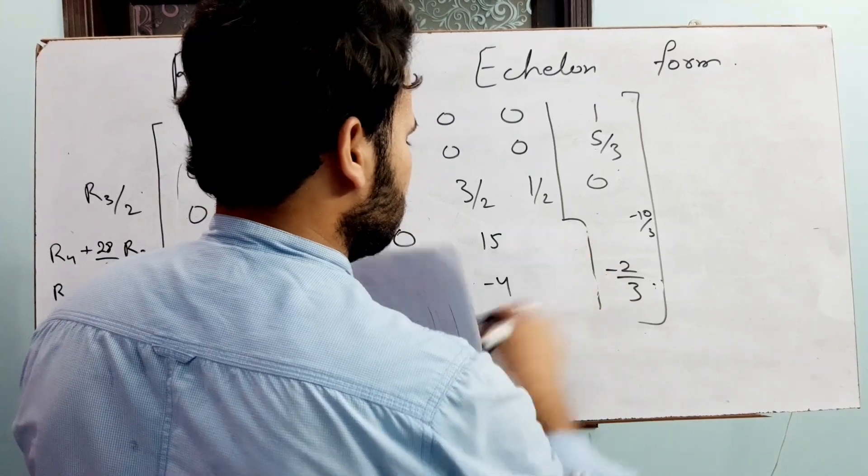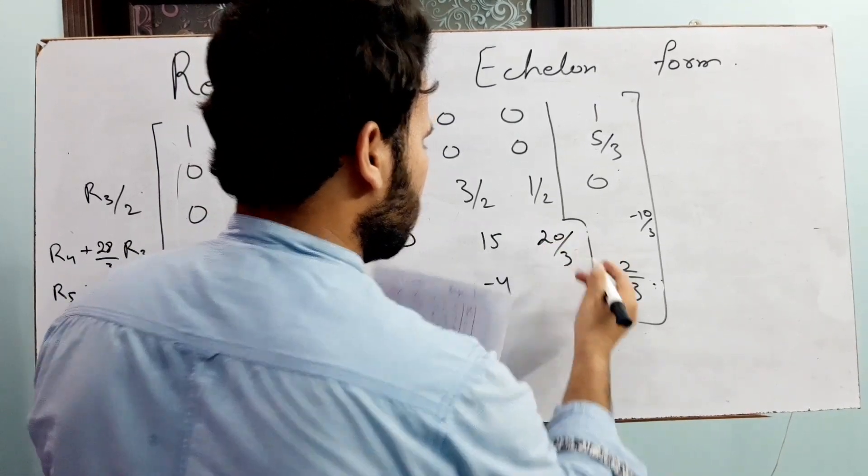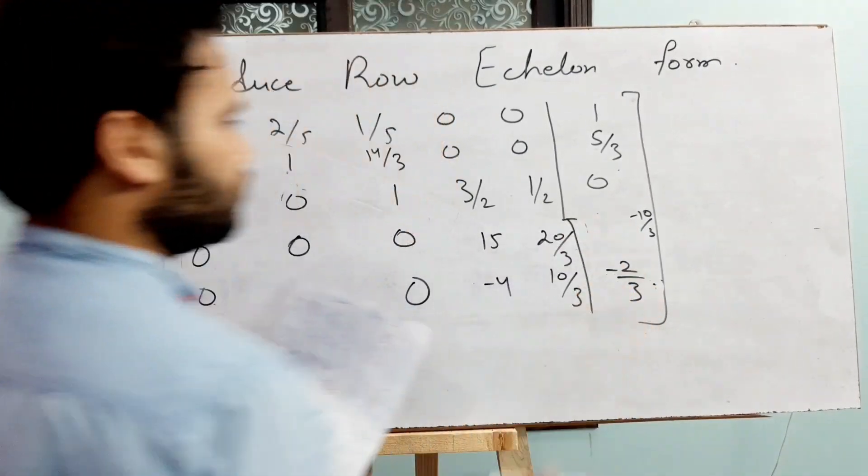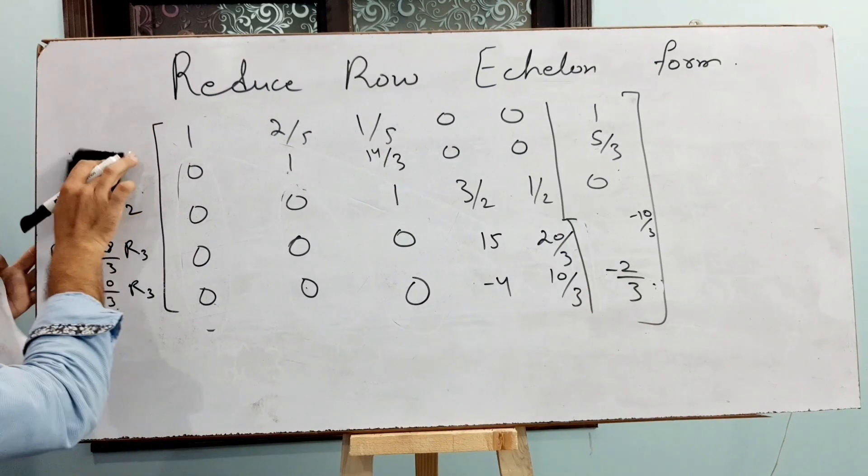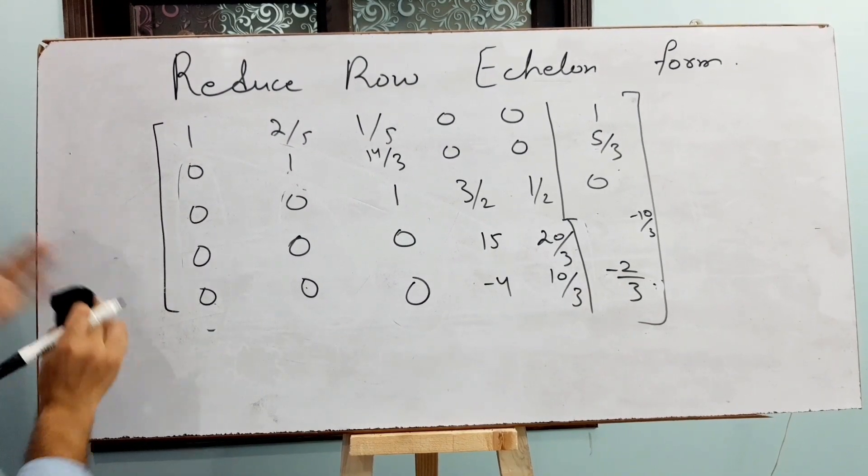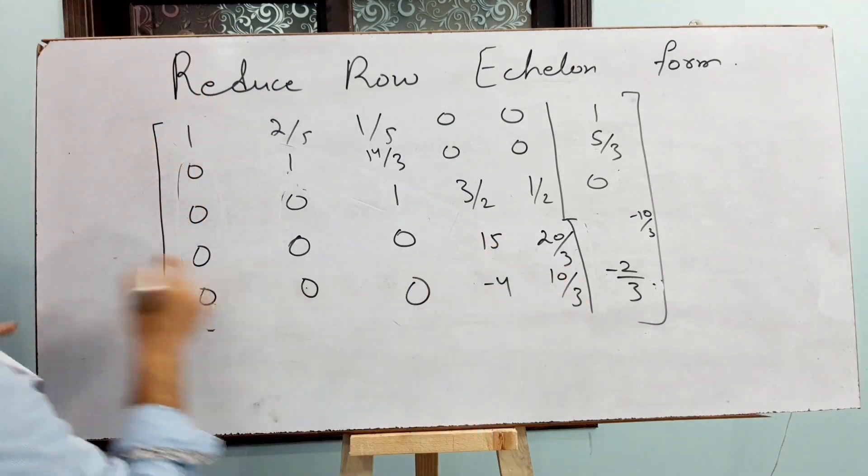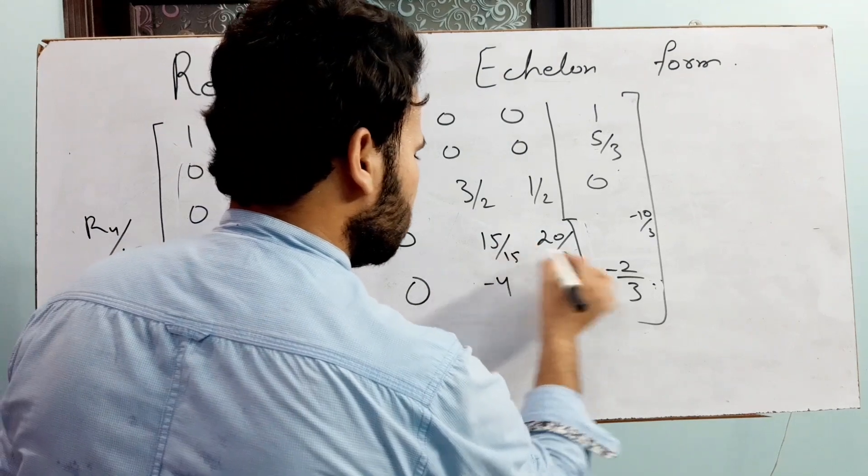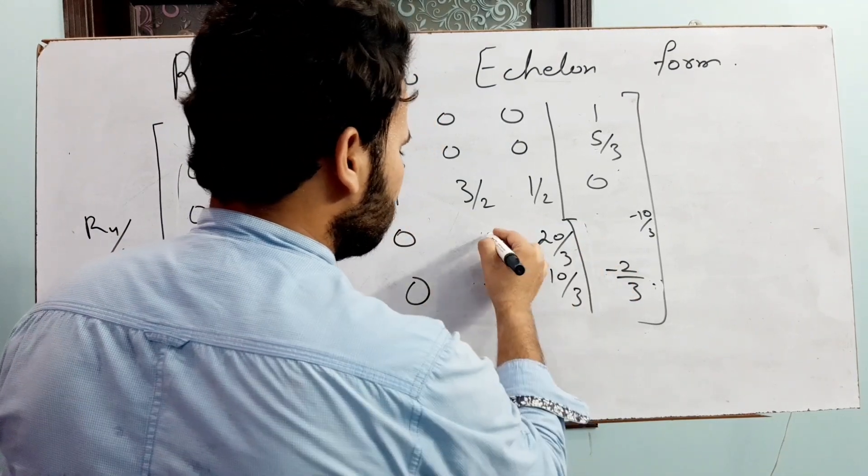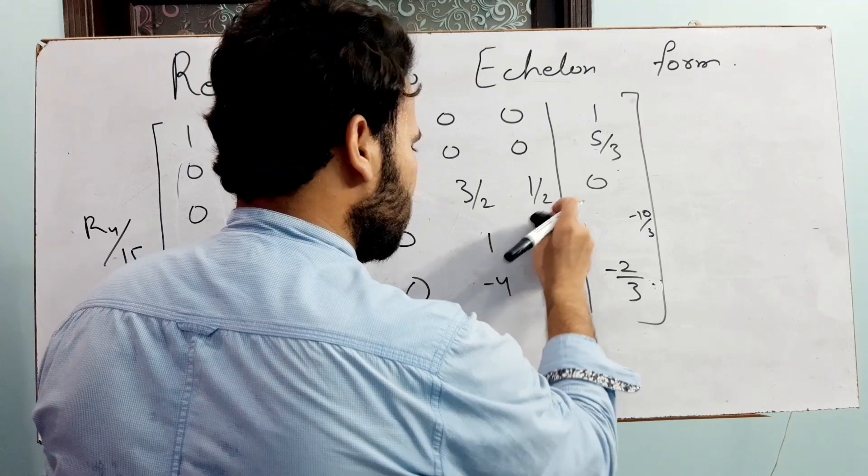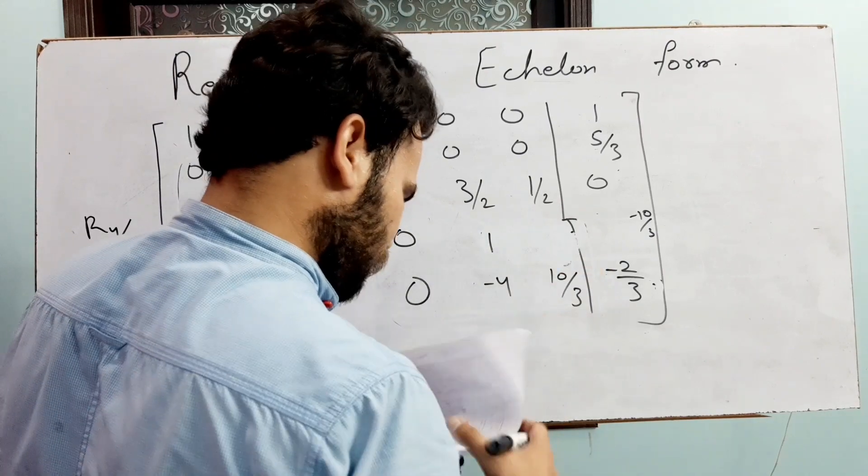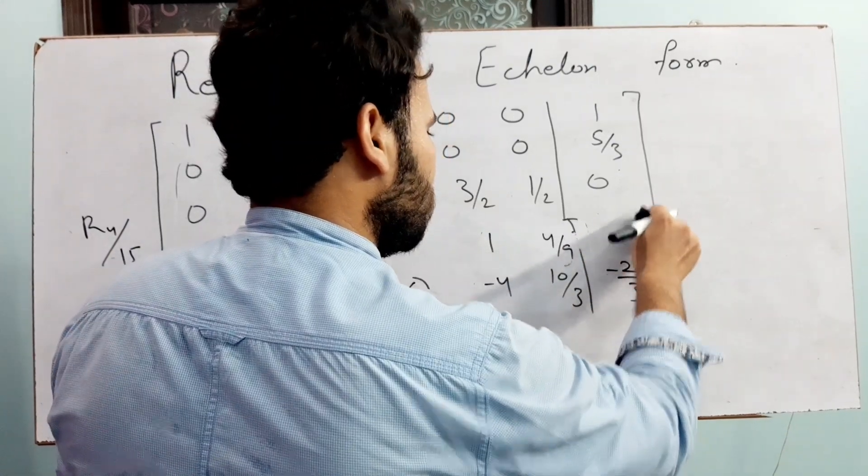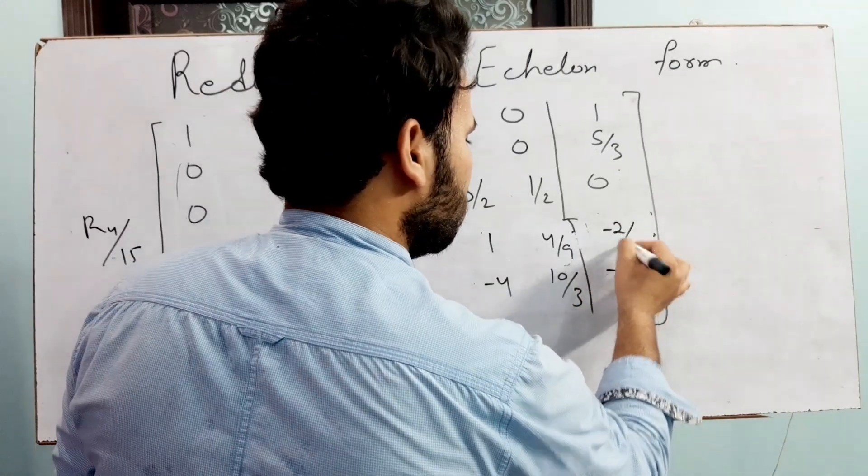Now, this diagonal will be 1, so R4 dividing by 15. Here this will be 1. Now this 20 by 3 will be 4 by 9 and this minus 10 by 3 will be minus 2 by 9.